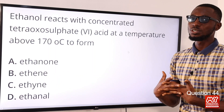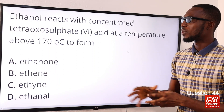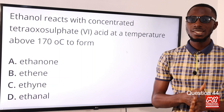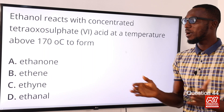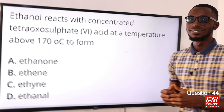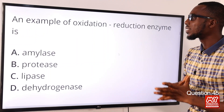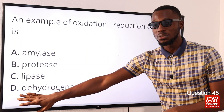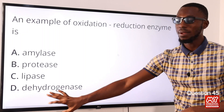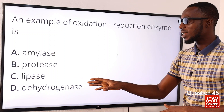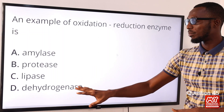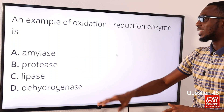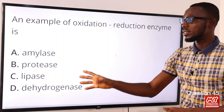Question 44: Ethanol reacts with concentrated H₂SO₄ at a temperature above 170°C to form what? This is a dehydration reaction where ethanol reacts with concentrated H₂SO₄ to first produce ethyl hydrogen sulfate, which in turn decomposes to form ethene. The correct option is option B — ethene. Question 45: An example of an oxidation-reduction enzyme is dehydrogenase — option D. From the name, 'dehydro' means removal of hydrogen. Dehydrogenase is a versatile enzyme very functional in cell respiration. Option D is the correct option.